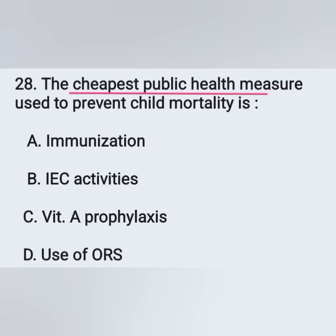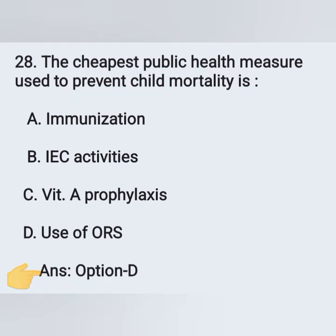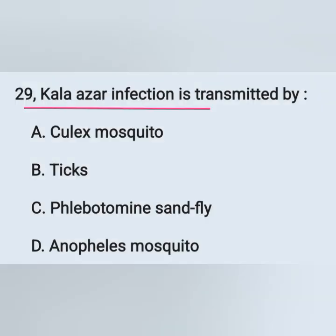Question 28: The cheapest public health measure used to prevent child mortality is — options: option A, immunization; option B, IEC activities; option C, vitamin A prophylaxis; option D, use of ORS. The cheapest public health measure to prevent child mortality is ORS. Option D is the correct answer — use of ORS, oral rehydration solution.